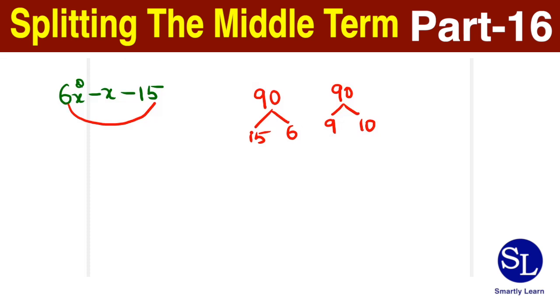So let's start placing the signs. The product is minus 90 and I need the sum as minus 1, so minus 90 is plus 9 and minus 10. Now let's start splitting this: 6x squared plus 9x minus 10x minus 15. Between the first two terms, the common term I'm taking is 3x, so this gives me a 2x plus 3.